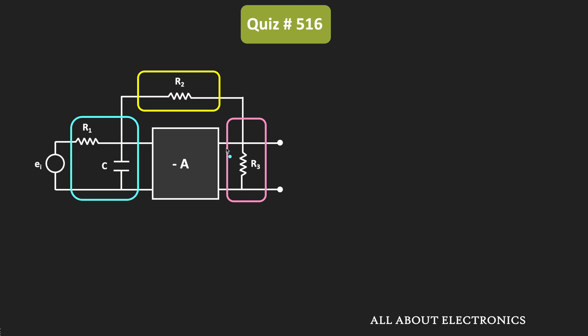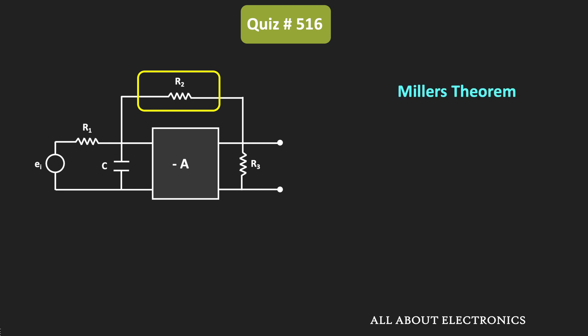For the sake of completeness, let us derive the expression for Vout divided by Vin. Resistor R2 is connected in the feedback. Using Miller's theorem, we can represent this feedback resistor both on the input and the output side. On the input side, the equivalent resistance is R2 divided by 1 minus G, where G is the open loop gain. In this case, the resistance on the input side equals R2 divided by 1 plus A.